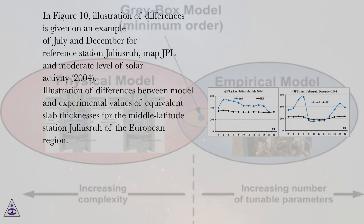In figure 10, illustration of differences is given on an example of July and December for reference station Julius Rue, map GPL in moderate level of solar activity, 2004. Illustration of differences between model and experimental values of equivalent slab thicknesses for the middle latitude station Julius Rue of the European region.